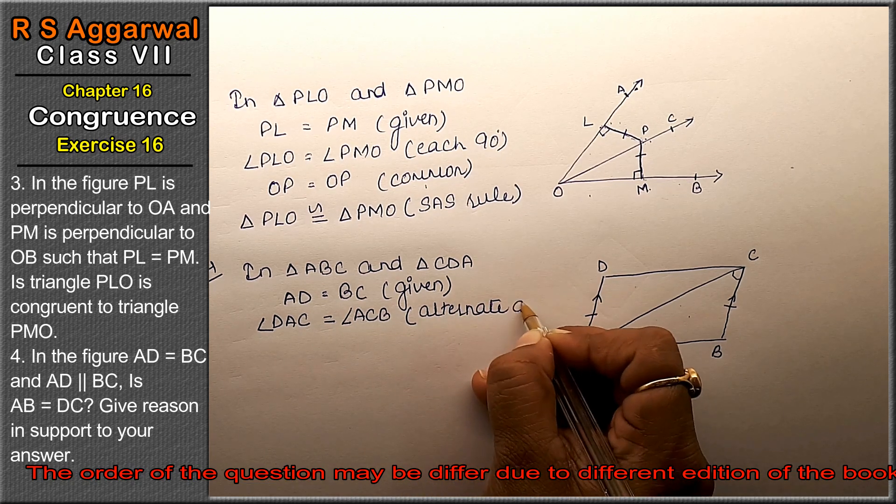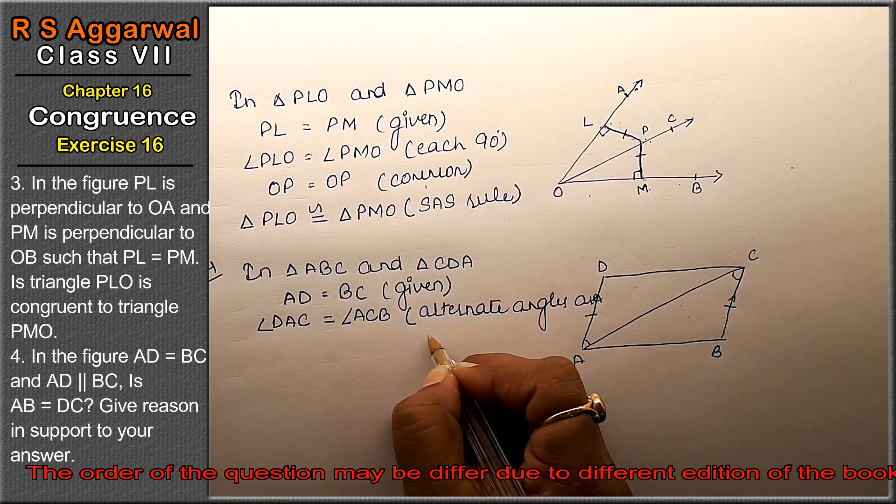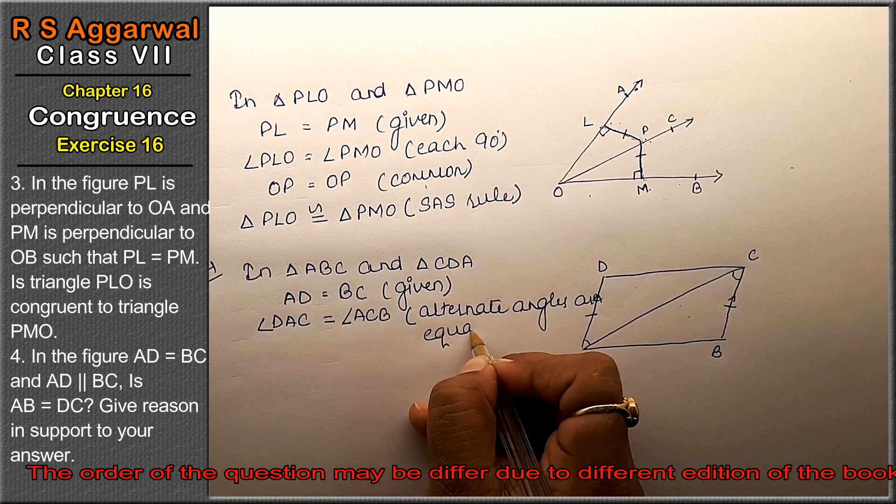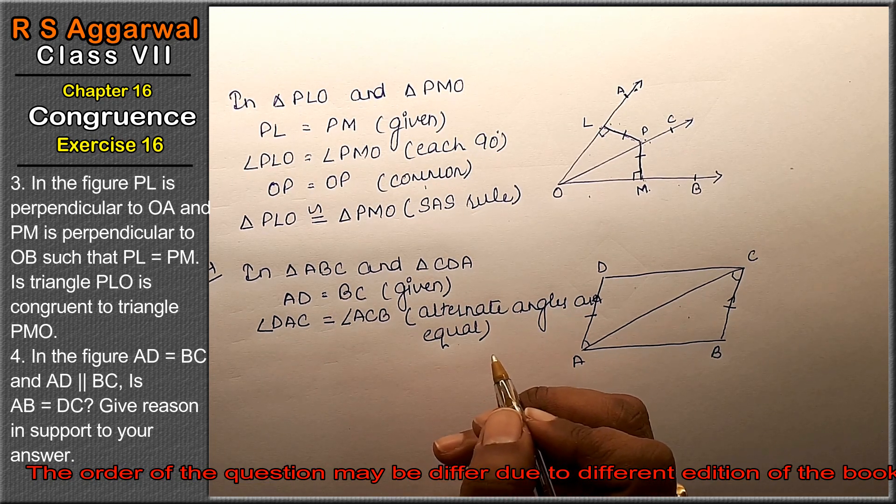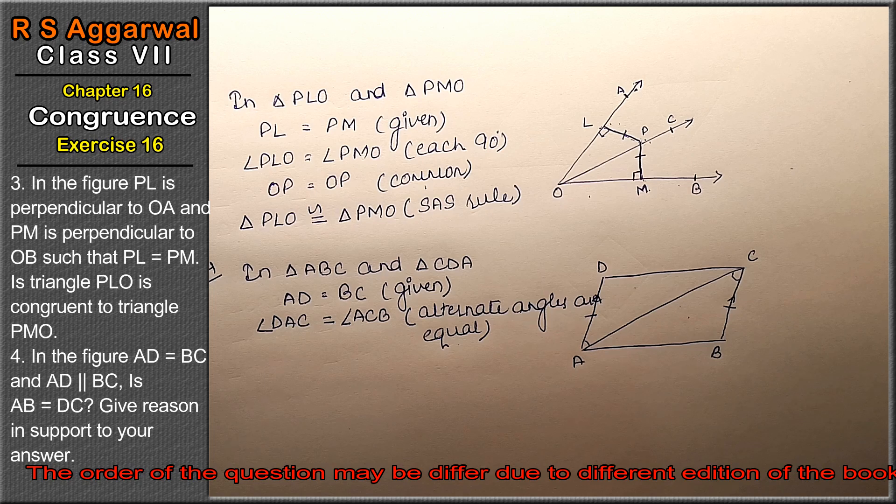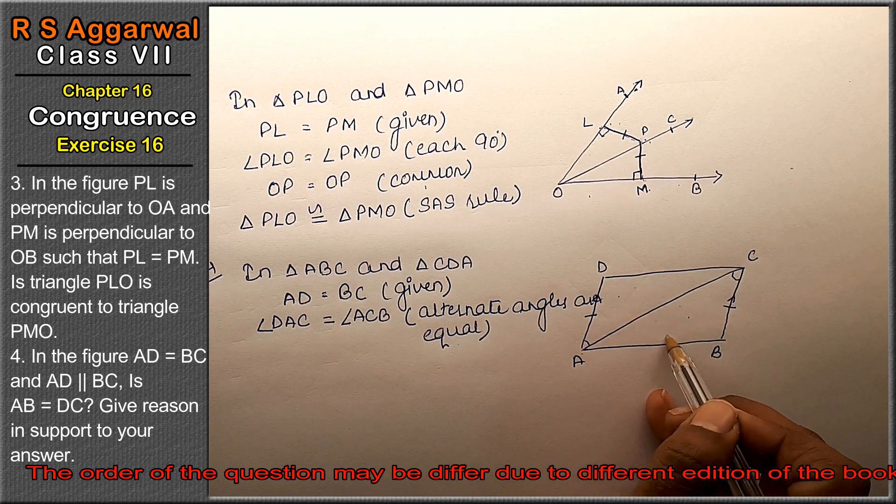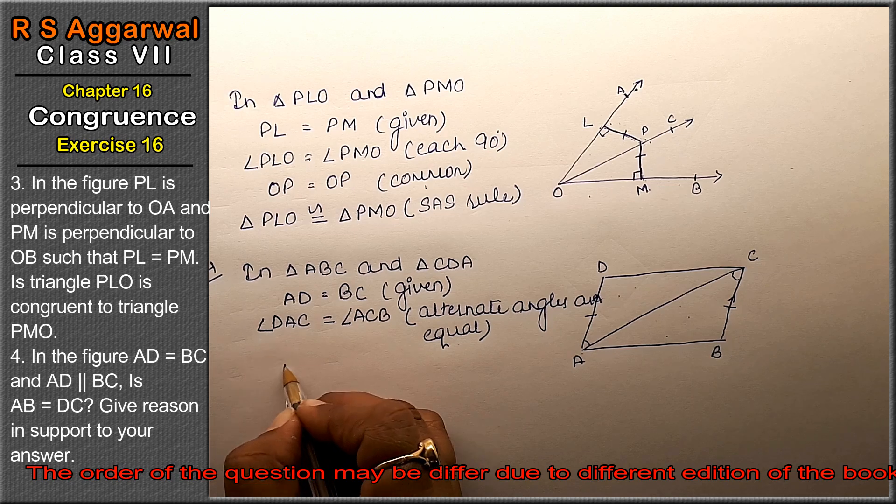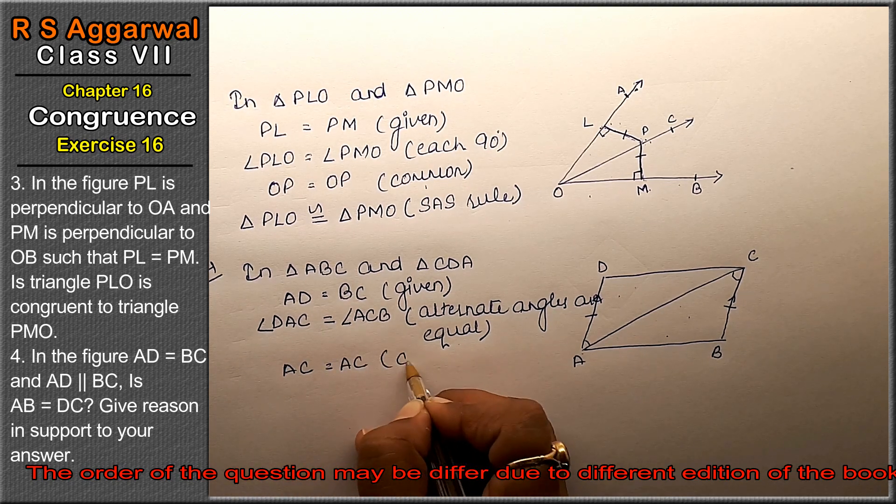How can we prove the inside? In triangle DAC and this triangle, AC is common to both triangles. AC equals AC, it is common.